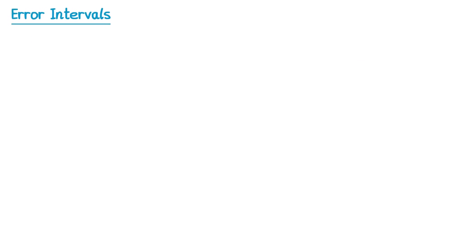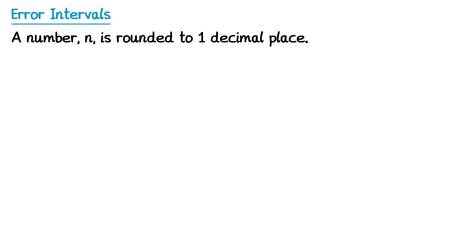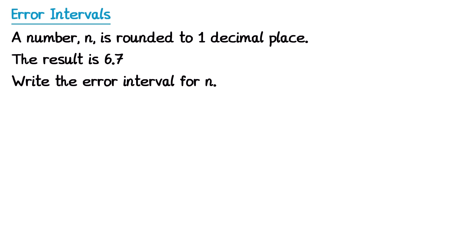Let's have a look at what an exam question might look like. A typical exam question would say: we have a number n which has been rounded to 1 decimal place, the result is 6.7, and we need to write down the error interval for n. To do this, we sketch a number line and place 6.7 in the middle. Since it's to 1 decimal place, the number immediately below is 6.6 and immediately above is 6.8. Then we look at the midpoints of these to find the upper and lower bounds.